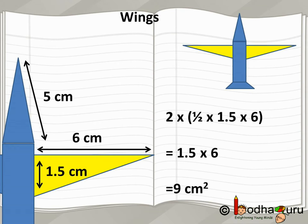Now, here this is equal to 2 multiplied by half multiplied by base which is 1.5 multiplied by height which is equal to 6. 2 and 2 cancel each other and we get 1.5 multiplied by 6 which is equal to 9.0 square centimeter.